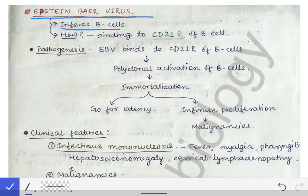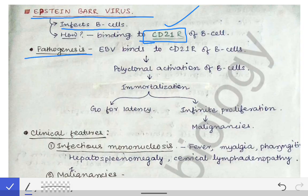The Epstein-Barr virus infects B cells by binding to the CD21 receptor of the B cells. Please remember this name — the CD21 receptor — by virtue of which this virus affects the B cells. This is a very important MCQ question.